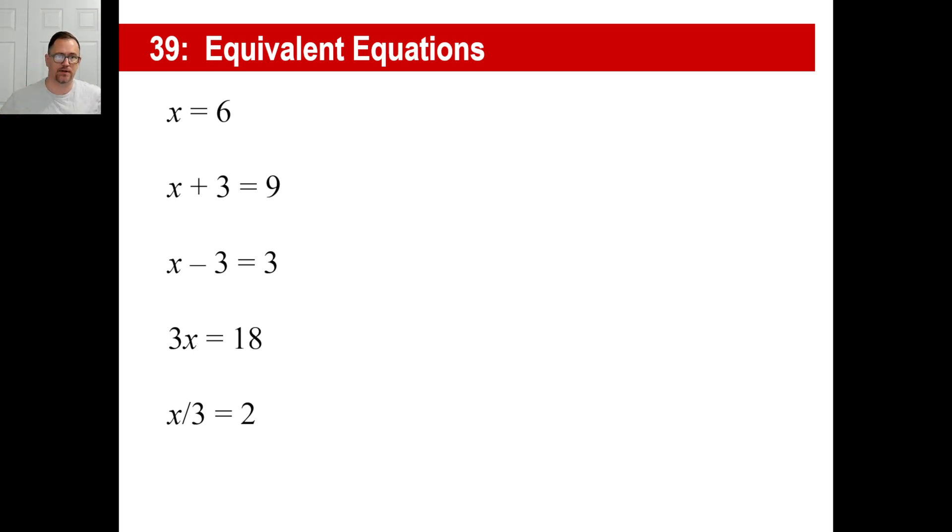The reason they're called equivalent equations is because if there's an equation like x equals 6, and if x is equal to 6, then if you put 6 in every single one of these equations below, they're all true equations. Remember we had those conditional equations, true equations, false equations. Look at the second one: six plus three equals nine, true. Six minus three equals three, true. Three times six equals 18, true. Six divided by three equals two, true.